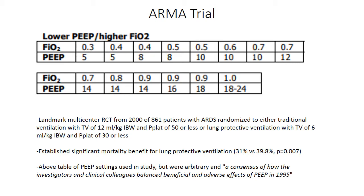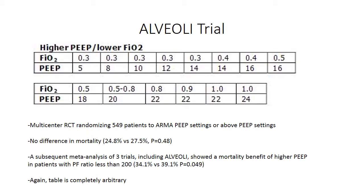After the ARMA trial, there was interest in whether some patients with ARDS would benefit from a higher PEEP strategy. The Alveoli trial — a multicenter RCT of 549 patients — compared ARMA PEEP/FiO2 settings versus higher PEEP settings and showed no difference in mortality between the two. However, a subsequent meta-analysis of three trials including Alveoli did show a mortality benefit of higher PEEP in patients with a P/F ratio less than 200 — that is, moderate to severe ARDS. It became common practice to consider a higher PEEP strategy in this subset of patients, but again these table settings were completely arbitrary.